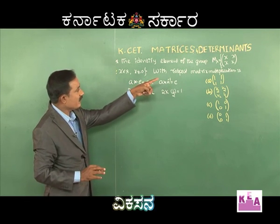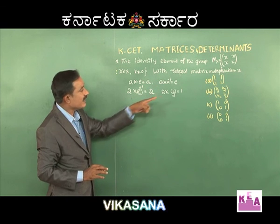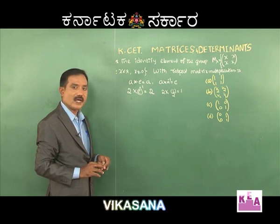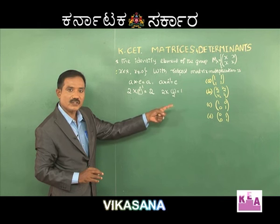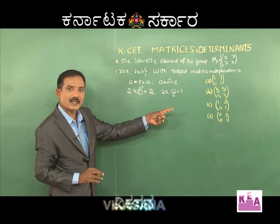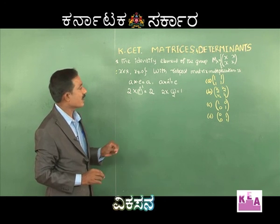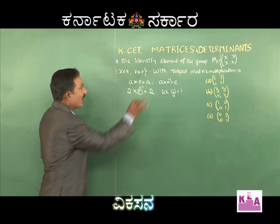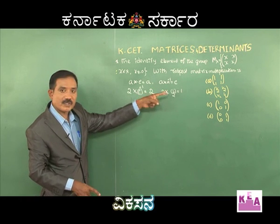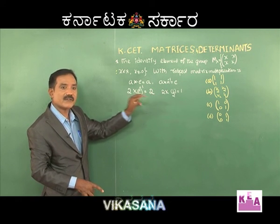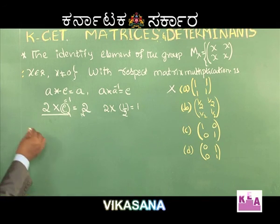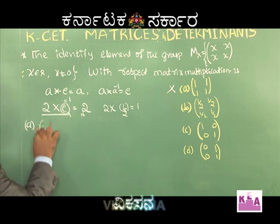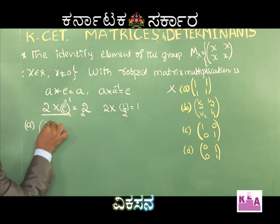For a matrix, the identity matrix is normally [1, 0; 0, 1], which equals 1. Now let's look at the given matrix. Let's check option A: matrix [x, x; x, x] multiplied by option A, which is [1, 1; 1, 1]. Check option A.